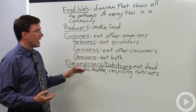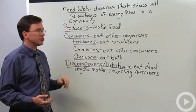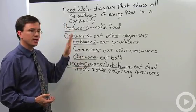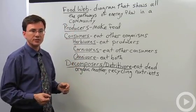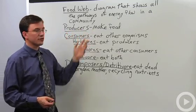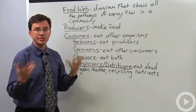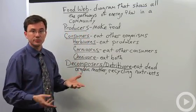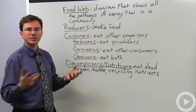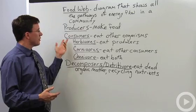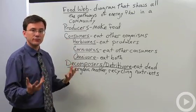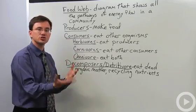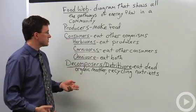There are terms used to describe the various organisms in that community. There are the producers — the ones that are producing or making the food, typically plants or algae. There are the consumers, which are not making their own food; instead, they consume other organisms.